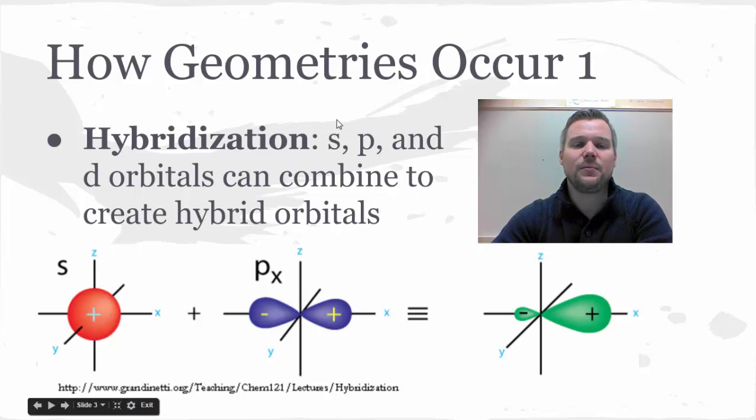In order to make that happen, VSEPR talks about something called hybridization. Hybridization is where we take multiple things together to get a better outcome. Like a hybrid car takes an electric motor and a gasoline engine and puts them together in order to come up with a better product.